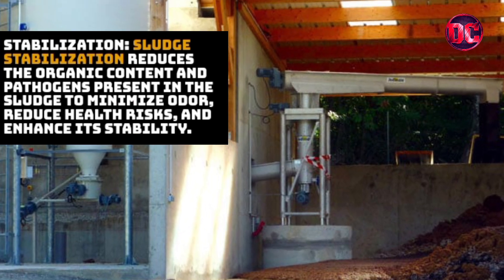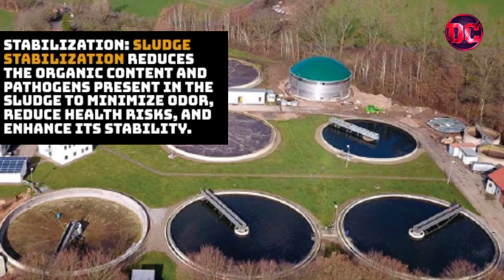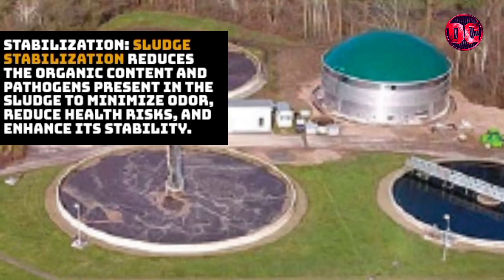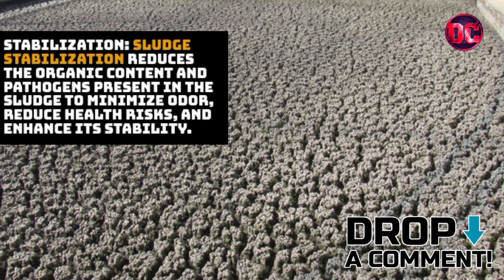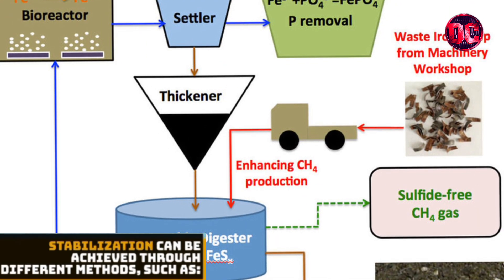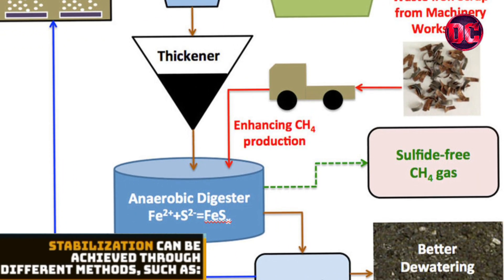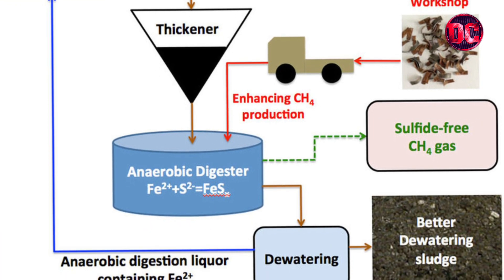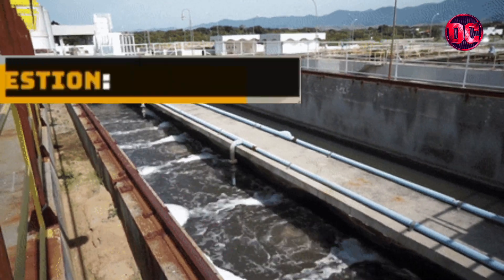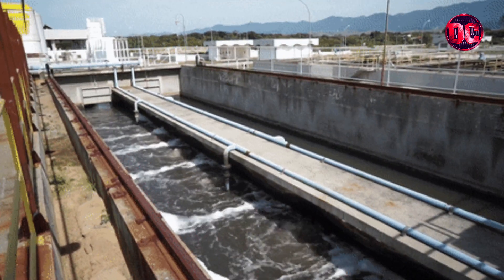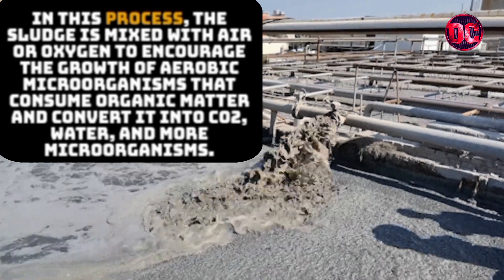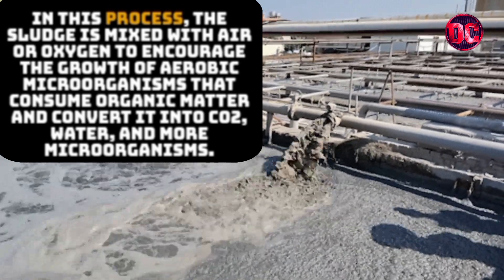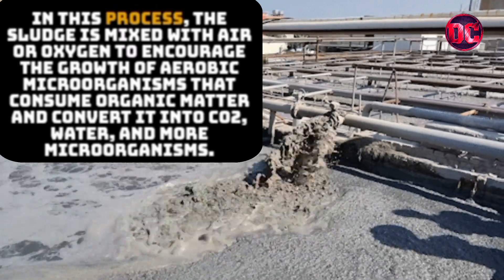Stabilization reduces the organic content and pathogens present in the sludge to minimize odor, reduce health risks and enhance its stability. Stabilization can be achieved through different methods, such as aerobic digestion. In aerobic digestion, the sludge is mixed with air or oxygen to encourage the growth of aerobic microorganisms that consume organic matter and convert it into CO2, water and more microorganisms.